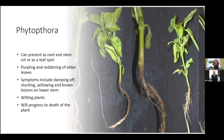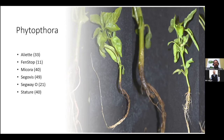If you see that wilting, that's typically going to be Phytophthora knocking your plants out. It will eventually result in the death of the plant. Some recommended controls for Phytophthora are Aliette, Fenstop, Mycora, Segovis, Segway, and Stature.